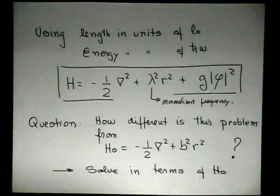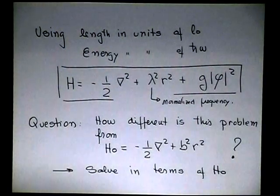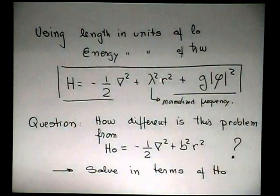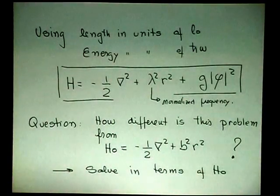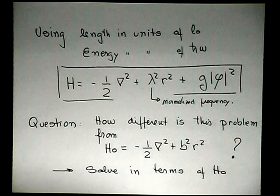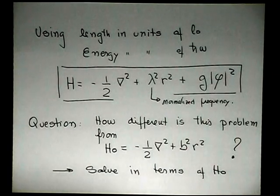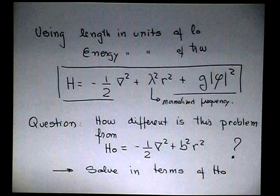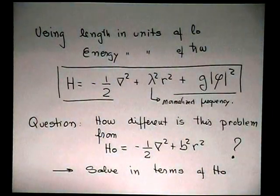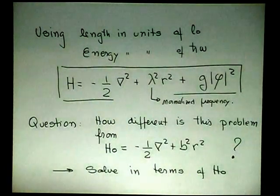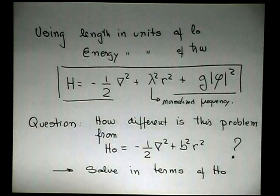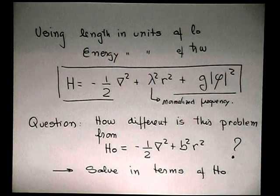So this is Hamiltonian, and I want to solve this. So the question is, how much different this is from this? This is a simple harmonic oscillator. And you're going to say, oh, it's very different. Here, we don't have this term. But maybe it's possible to adjust this parameter, which is related to frequency, to compensate the interaction.